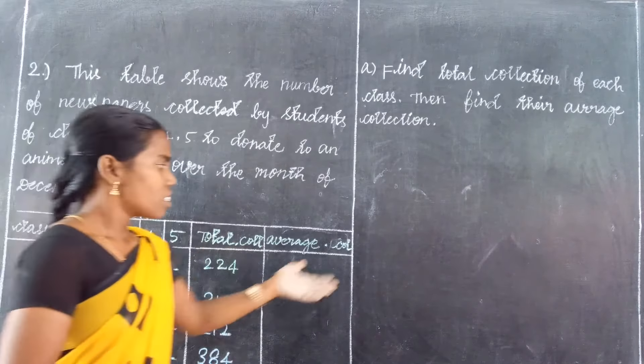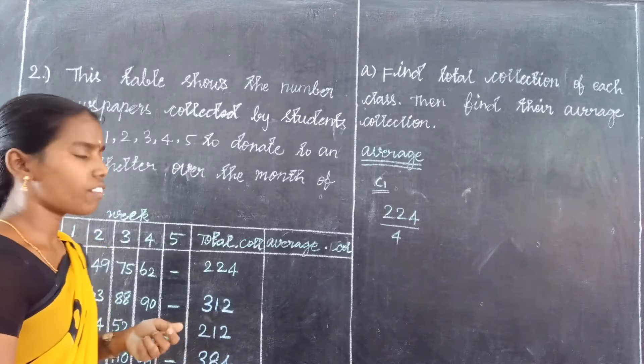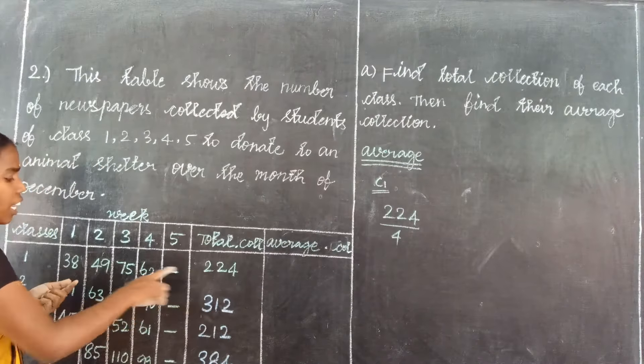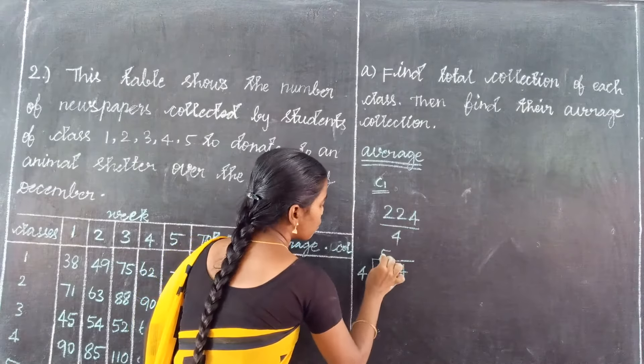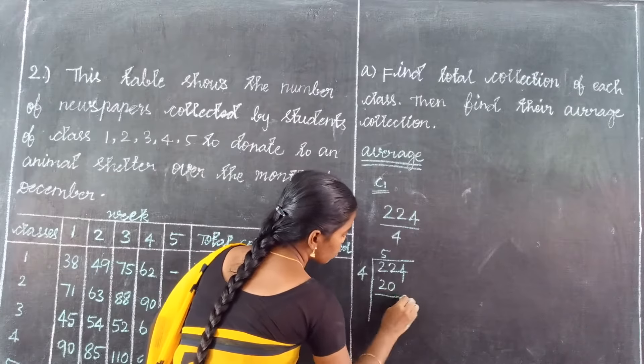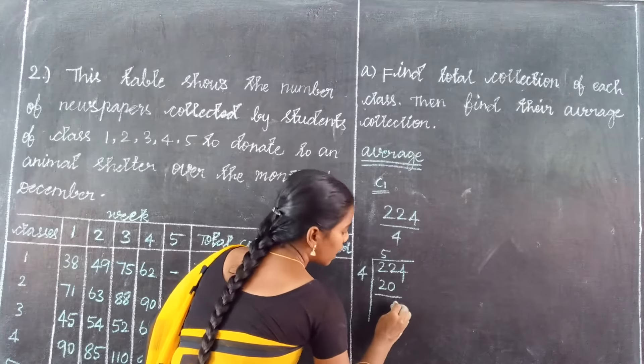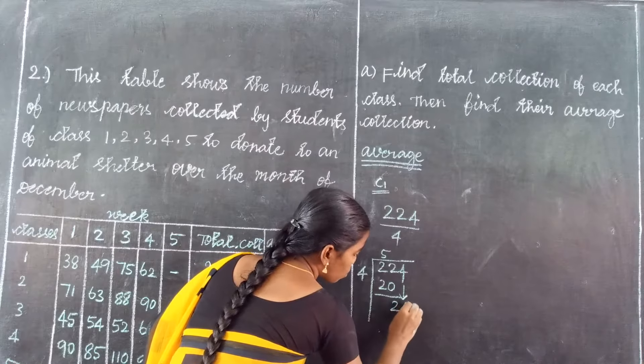So find the average for Class 1. The Class 1 total value is 224. Average equals total value divided by number of items. So 224 divided by 4. The total collection is 224, divided by number of items 4. So divide this value: 224 divided by 4.